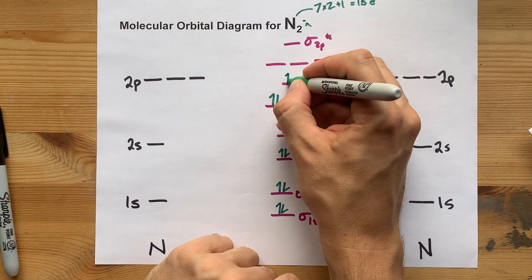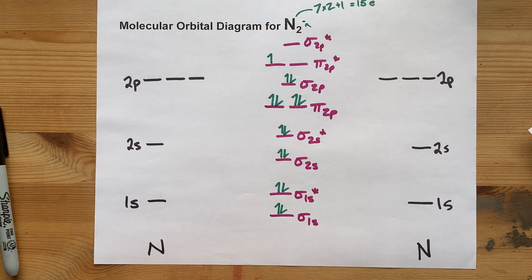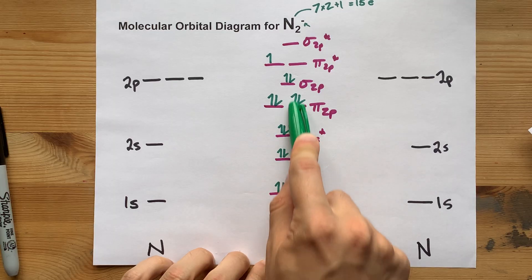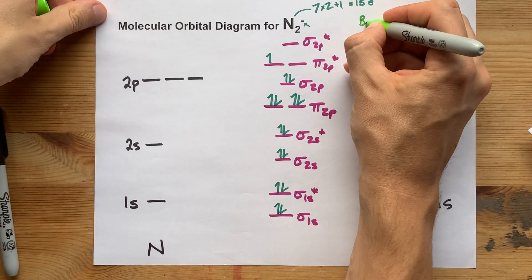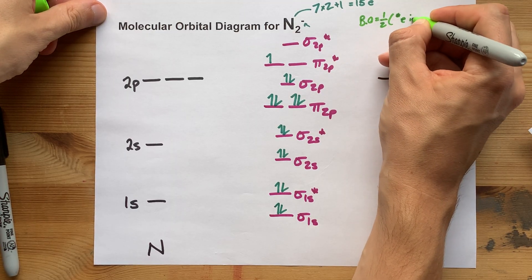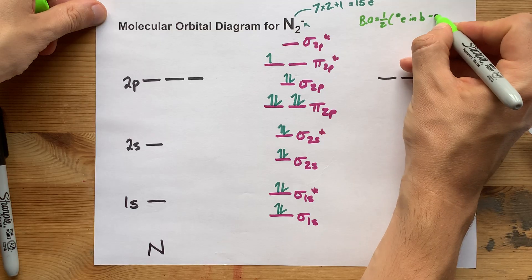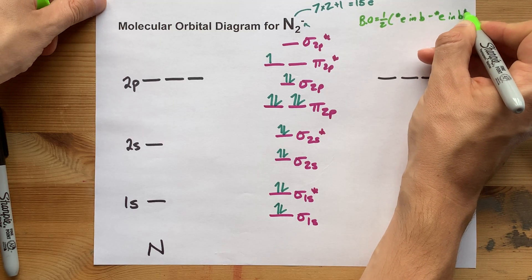Hund's rule: 13, 14, 15. Great. This is my molecular orbital diagram for N₂⁻. Your teacher may ask you for the bond order,